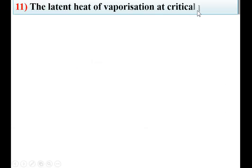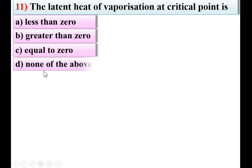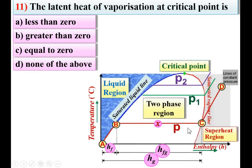Next: the latent heat of vaporization at the critical point is option less than 0, greater than 0, equal to 0, or none of the above. Consider this figure. Latent heat of vaporization corresponds to the B-to-C portion, symbolized as HFG, which represents the length of the dome. When you move upward in pressure, HFG decreases gradually and at the critical point it becomes 0. C is the right answer.